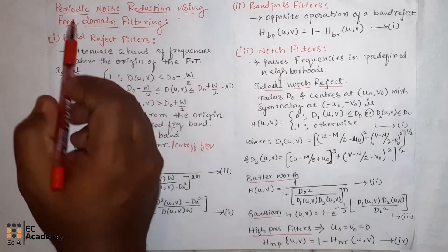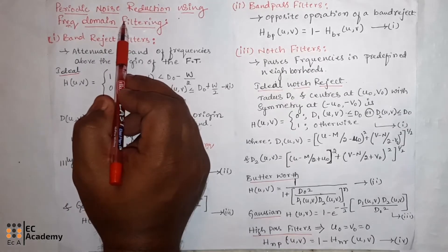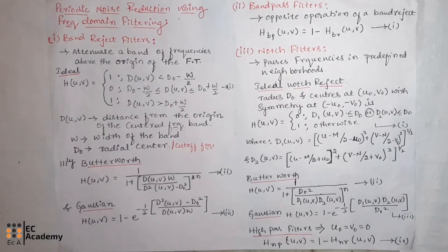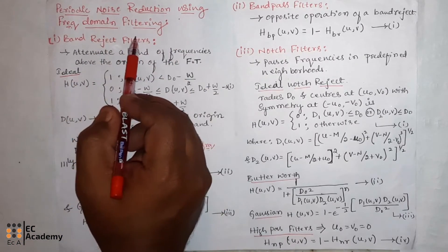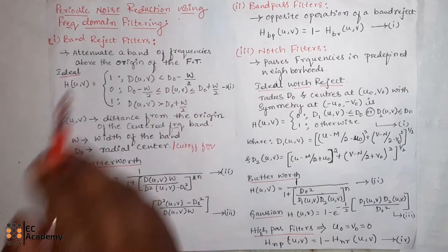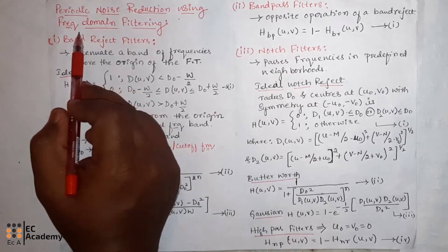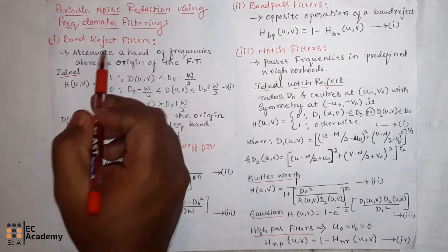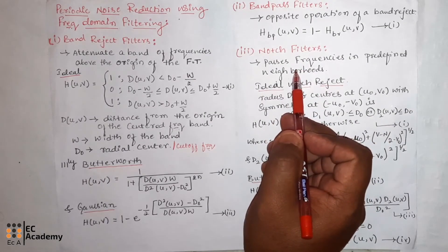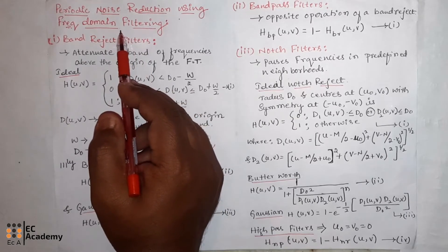From our previous lecture, we understood that periodic noise is the noise added to the image due to electrical or electromechanical interference during image acquisition. Periodic noise reduction using frequency domain filtering involves removing a particular range of frequencies from an image. The band reject filter, band pass filter, and notch filter are used as tools for periodic noise reduction using frequency domain filtering.